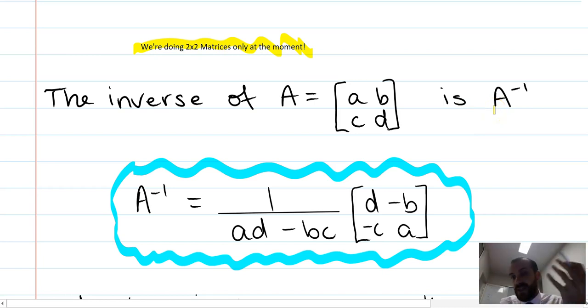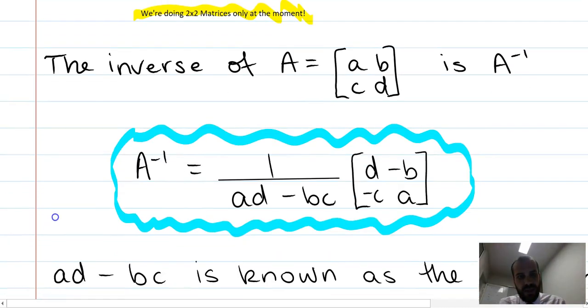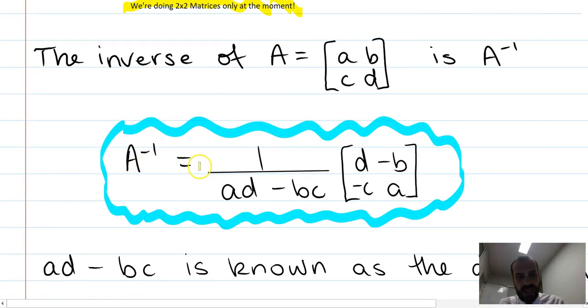We're going to write it as A to the negative 1, that's the inverse of A. And the inverse of A is equal to 1 over A times D minus B times C times this matrix: D, A, so swap D and A over, and leave B and C where they are, but make them negative.